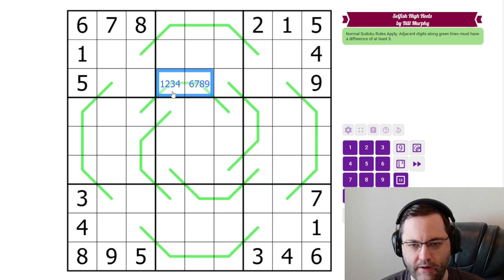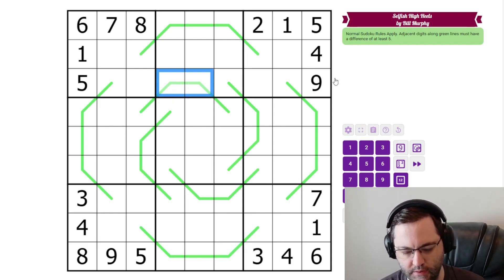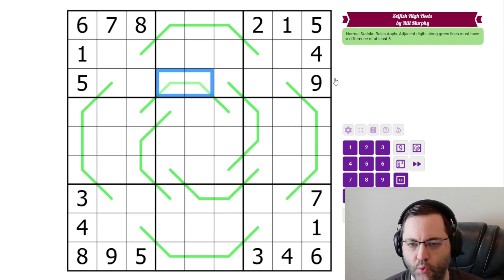We can also never have five on a German Whispers line, because five less than five is zero, and five more than five is ten, and neither of those are options for Sudoku, at least for regular nine by nine Sudoku.